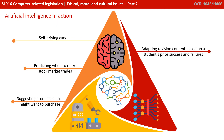Now that we've understood these different terms, what are some examples of artificial intelligence in action today? We've got a few on the screen: self-driving cars, predicting when to trade stocks and shares, suggesting products a user might want to purchase in online shopping, adapting revision content based on a student's prior success or failure, and alerting an operator about fixes and errors in manufacturing.